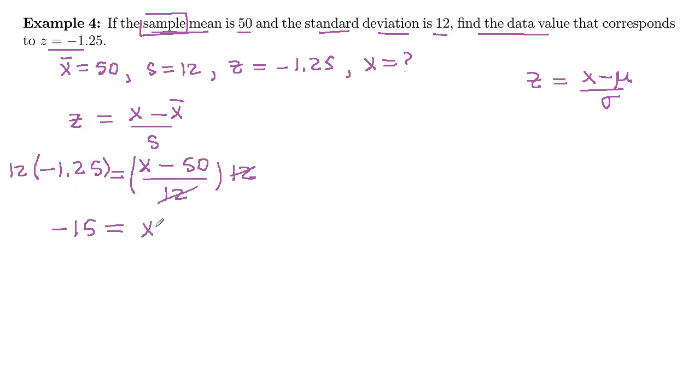And then x minus 50 left on the right. Next, we'll undo that subtracting 50 by adding 50 on both sides. So these guys cancel. x equals 50 minus 15, which is 35.